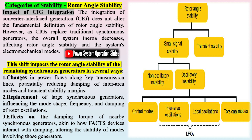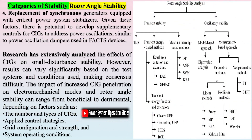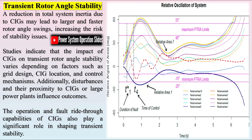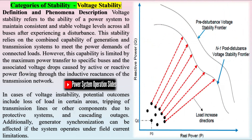Most large-scale CIGs are equipped with voltage source converters or similar designs, enabling full four-quadrant control. This allows for independent management of active and reactive currents within the capacity of the electronic switches, providing precise and rapid control of power flow under most conditions. While CIGs pose challenges, they also offer exceptional flexibility in controlling energy sources. For example, technologies like photovoltaic (PV) systems and battery energy storage systems enable rapid and sustained frequency responses.